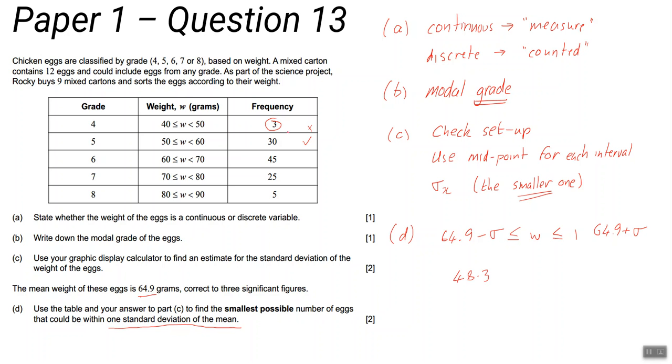If they have to be at least 48.3, all of these are going to be in. These ones, because the 48.3 is in this interval, they could all be less than that, so you can ignore them. It's a tricky question - have a go at it. The answer is obviously a whole number, but conceptually it's a little bit tricky.